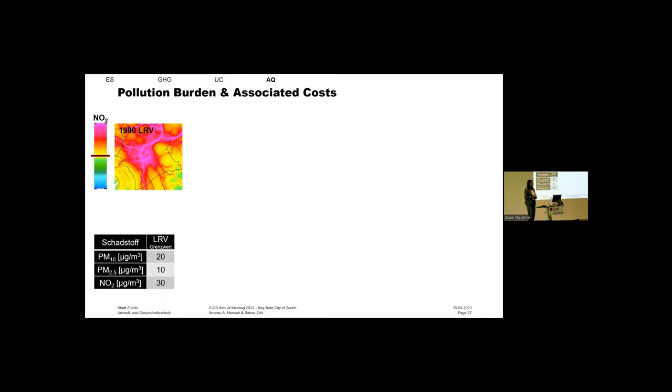What you see here is actually an EMPAC modeling result from the NO2 concentration in the city of Zurich in 1990, according to the legal limits. The legal limit is shown by this black bar. Where there's yellow color, you're above the legal limit. In 1990, it was rather challenging. The entire city of Zurich was above the legal limit, which is 30 micrograms per cubic meter. But then we had these action plans, and by 2020, the picture is much nicer.